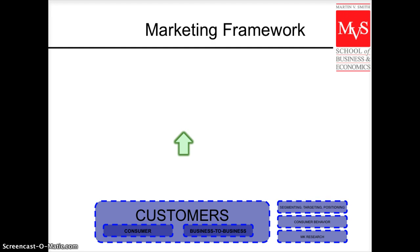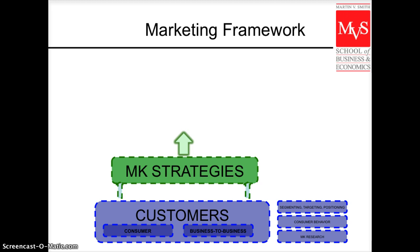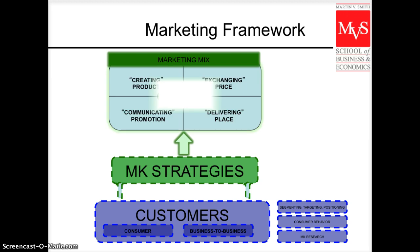We will spend another unit on segmenting, targeting, and positioning, because we cannot target the whole group of consumers at once. Marketing helps you identify groups of consumers with common needs. Once we are clear on that, we define our marketing strategies — that's unit 2 on strategic planning. Then we'll spend time on the marketing mix, the famous four P's: creating a product, exchanging, communicating, and place for final distribution.